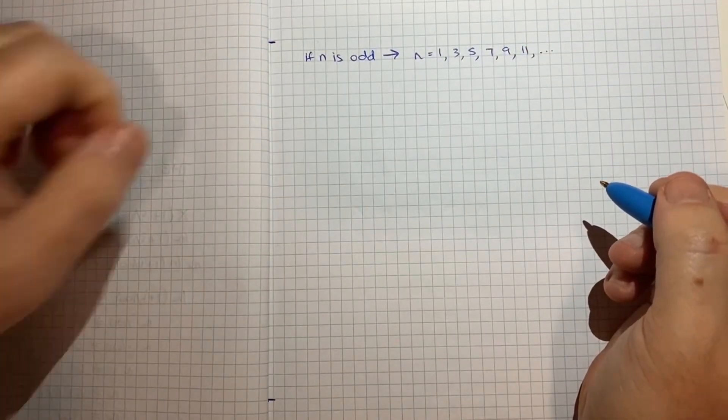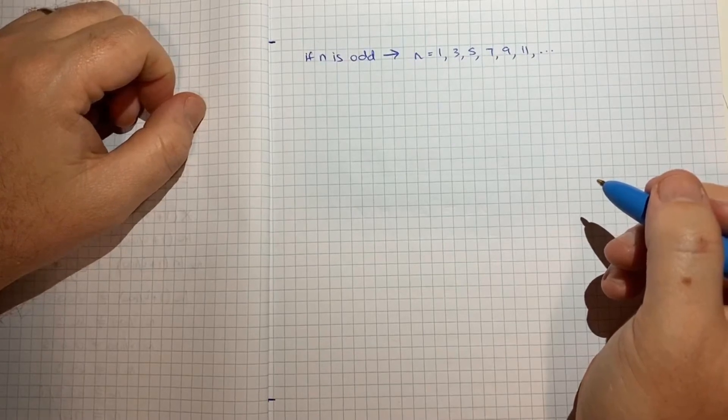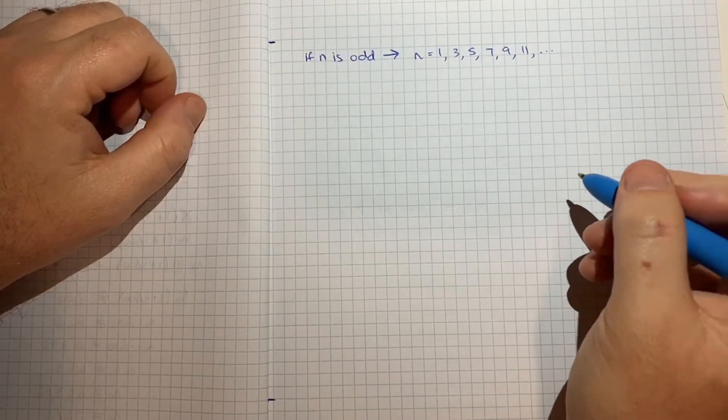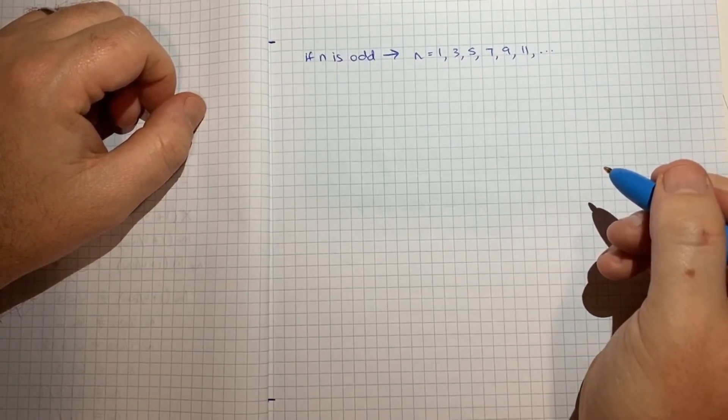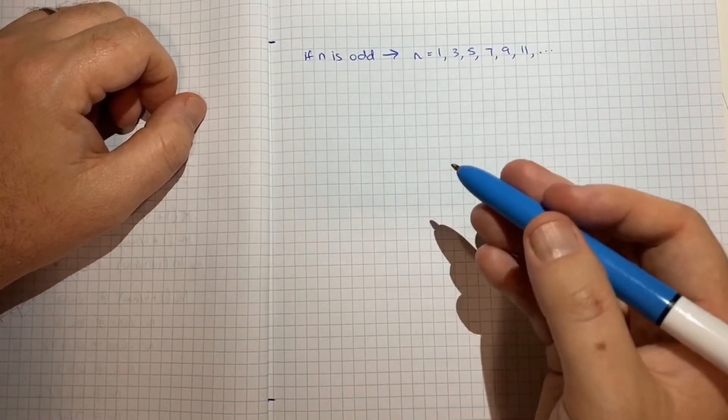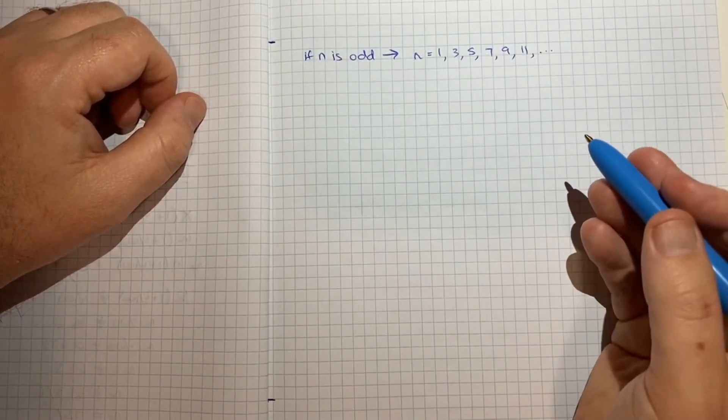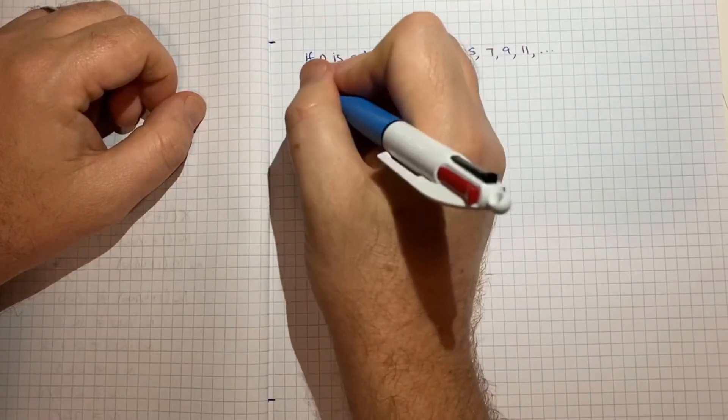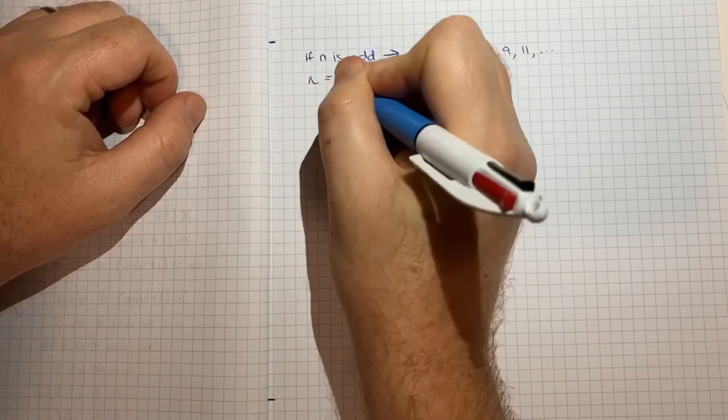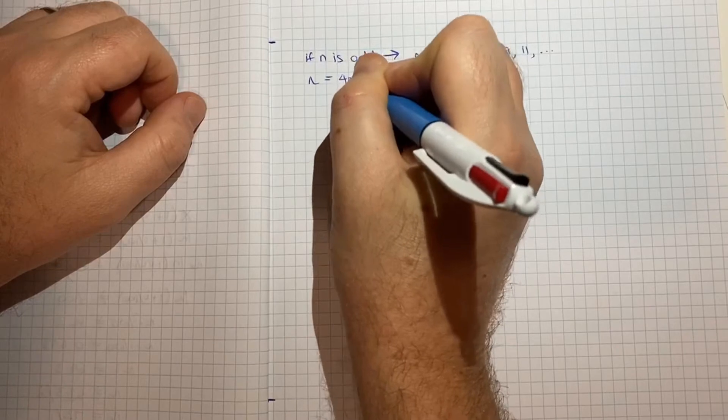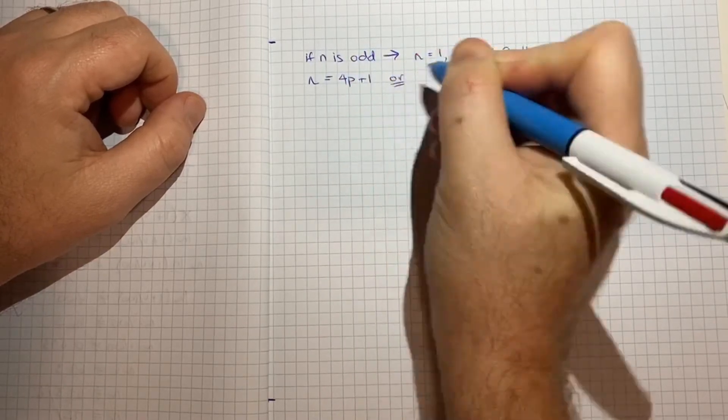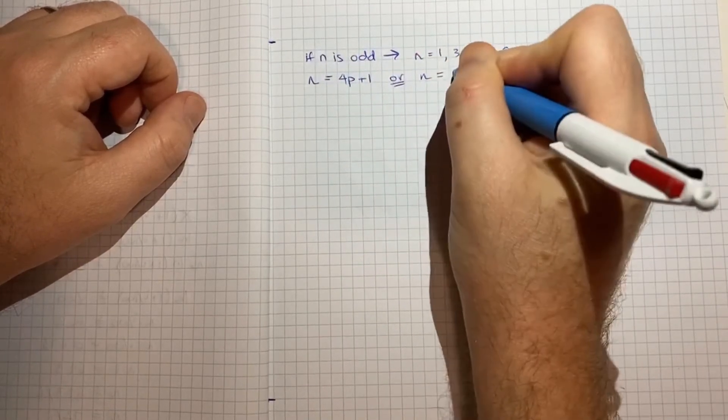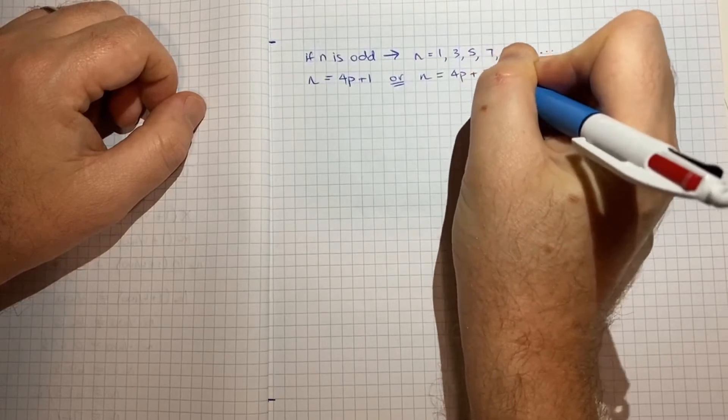What we need is a way to write n so that we always know we're dealing with an odd number and then we can work out what n squared minus 1 might look like. So what we can do is we can define n to be equal to 4p plus 1 or n is equal to 4p plus 3.